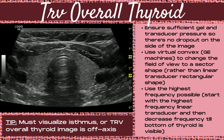When imaging the transverse overall thyroid, ensure that you have sufficient gel and transducer pressure so there's no dropout on the sides of the image. Use a tool called virtual convex — this is the name on GE machines — or any tool that changes the field of view from rectangular to a sector shape. This allows you to image the entire thyroid and a rim of surrounding tissue. Start with the highest frequency linear transducer and slightly decrease the frequency until the bottom of the thyroid is visible. Pro tip: you must visualize the isthmus, or your transverse overall thyroid image is off axis.